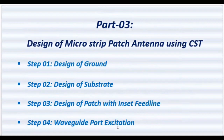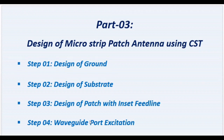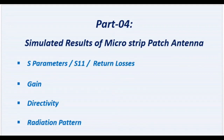Thirdly we will discuss about the calculation of the length of feed line, calculated using formula as well as online from CST. In part three we will discuss the complete design steps of microstrip patch antenna using CST — designing the ground, substrate, patch with inset feed line, and providing waveguide port excitation. In part four we will discuss the simulated results including S-parameters (S11 or return loss), gain, directivity, radiation pattern, and other results. So let's begin.